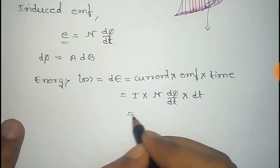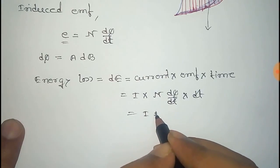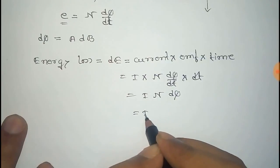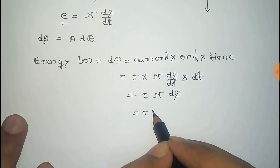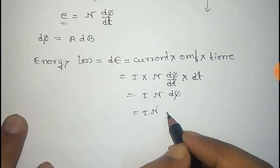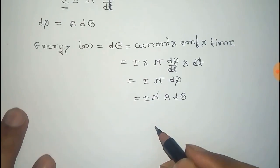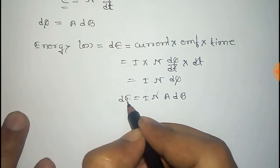Now from this, dt and dt cancel out, and remaining is I N dφ. Now that equals, we put the value of dφ there, that is A dB. That is dE.